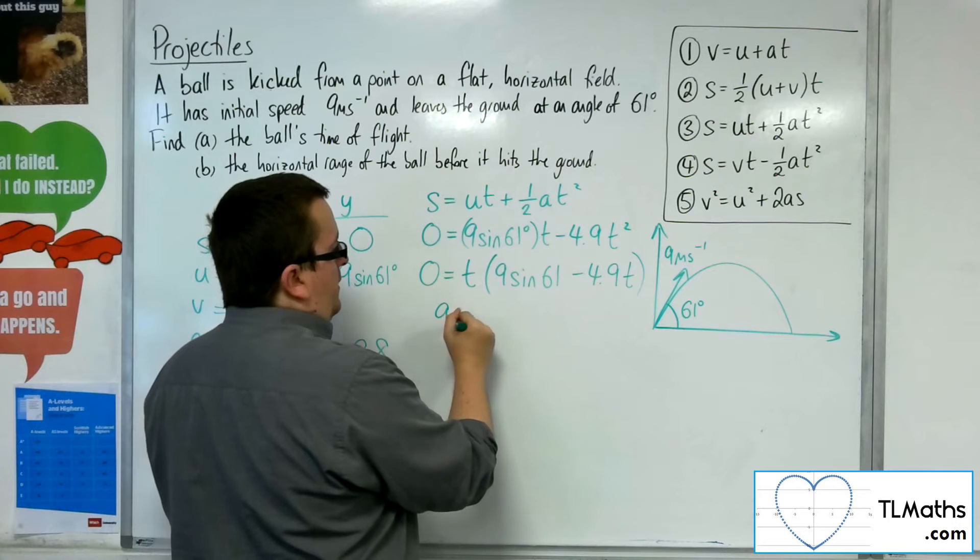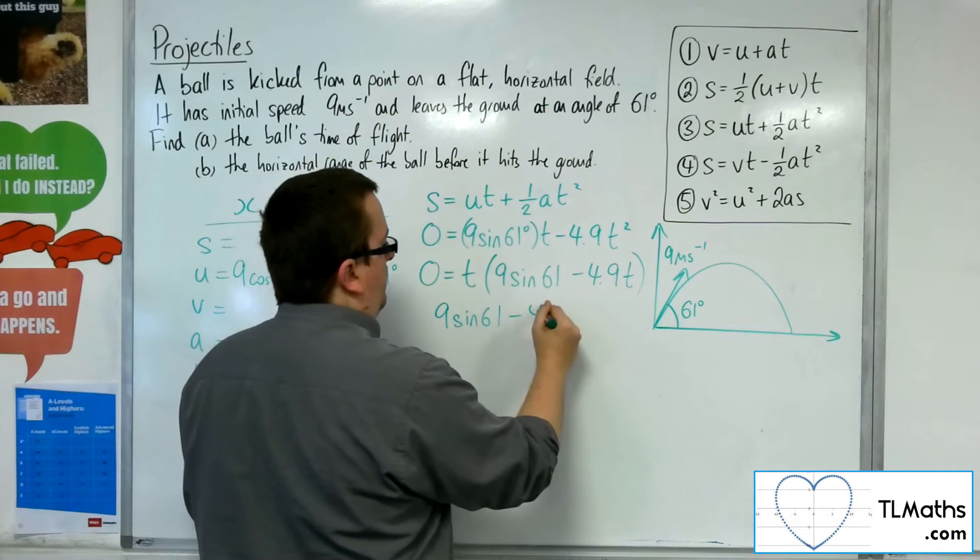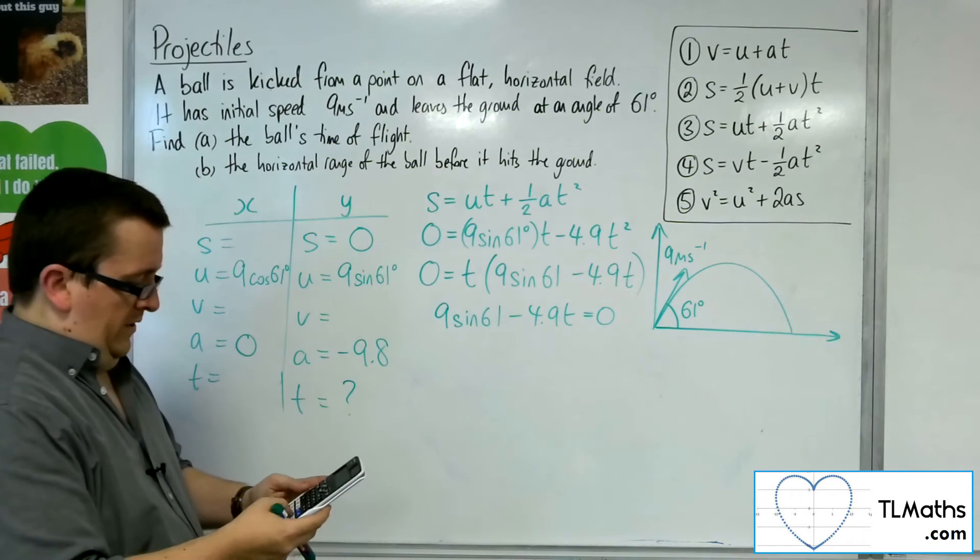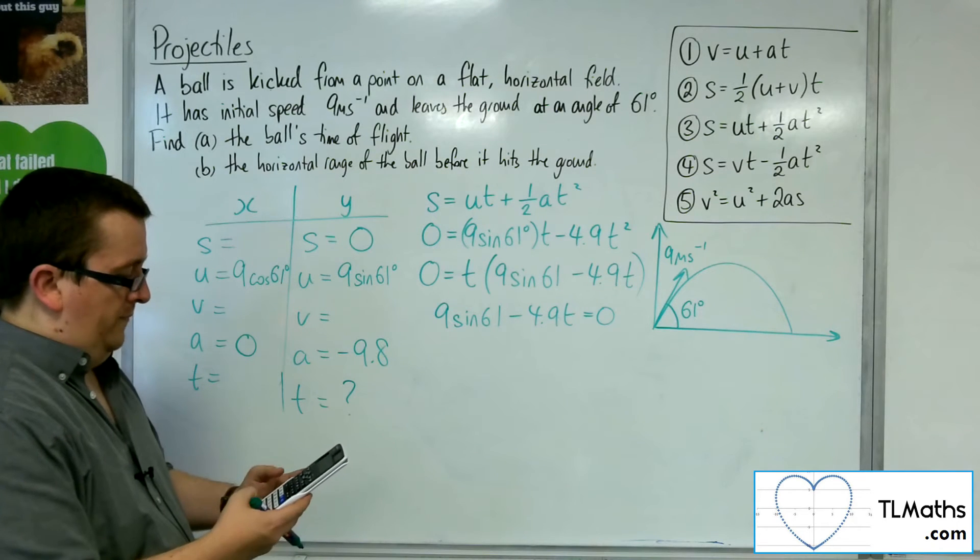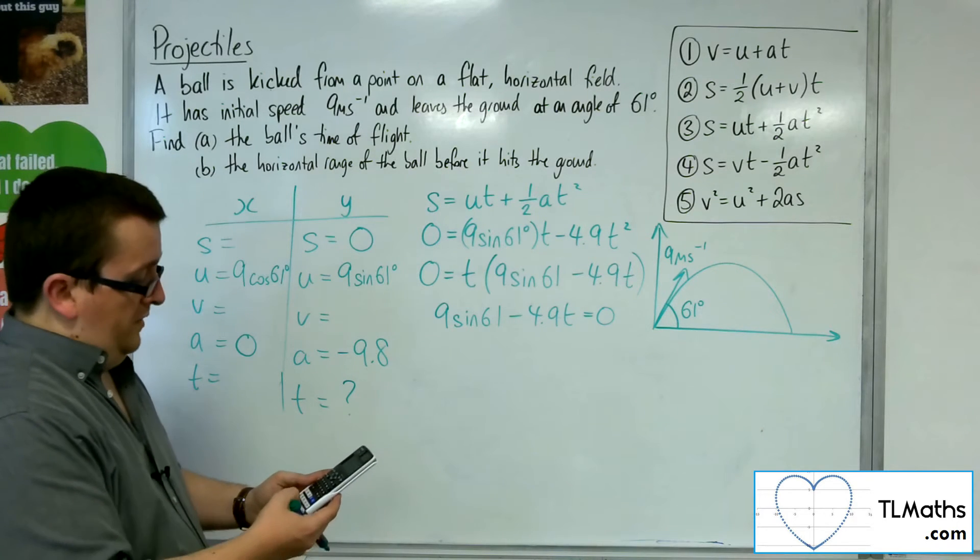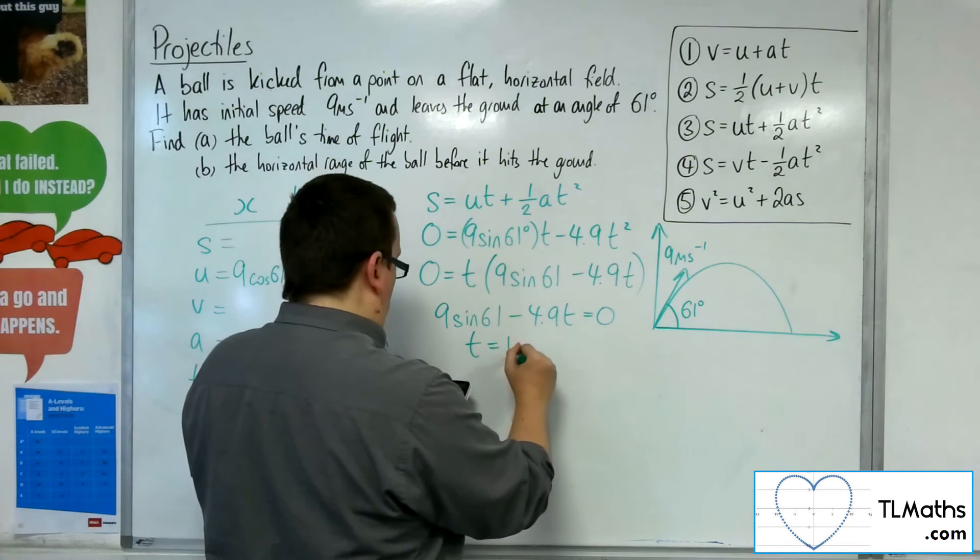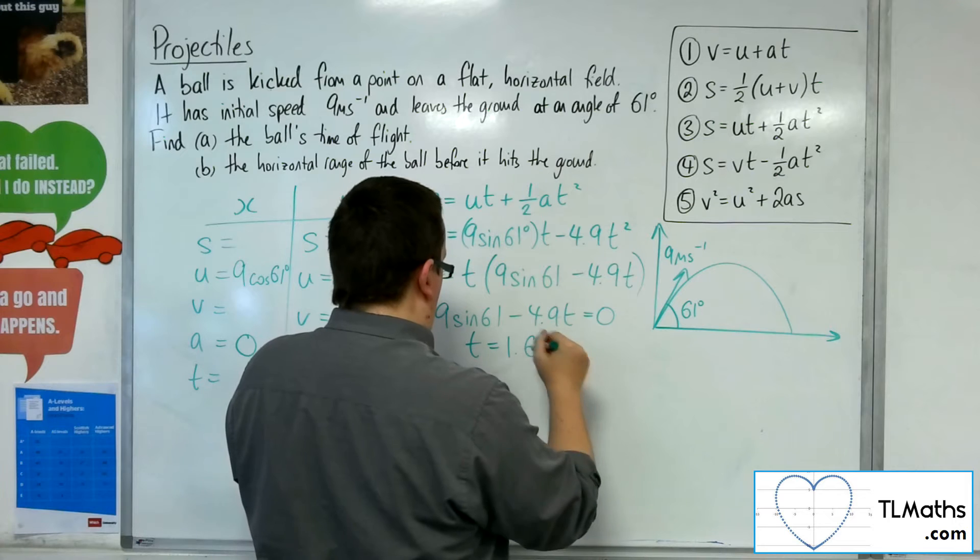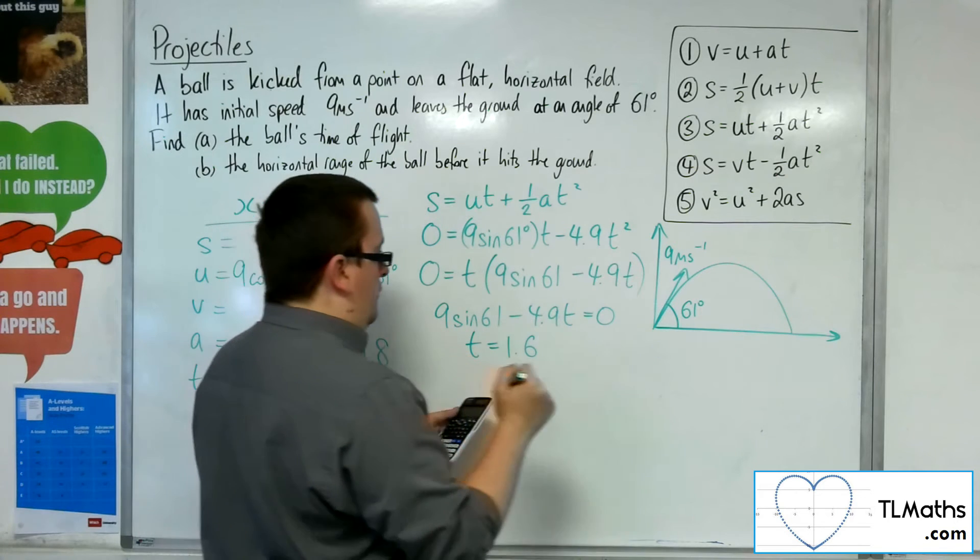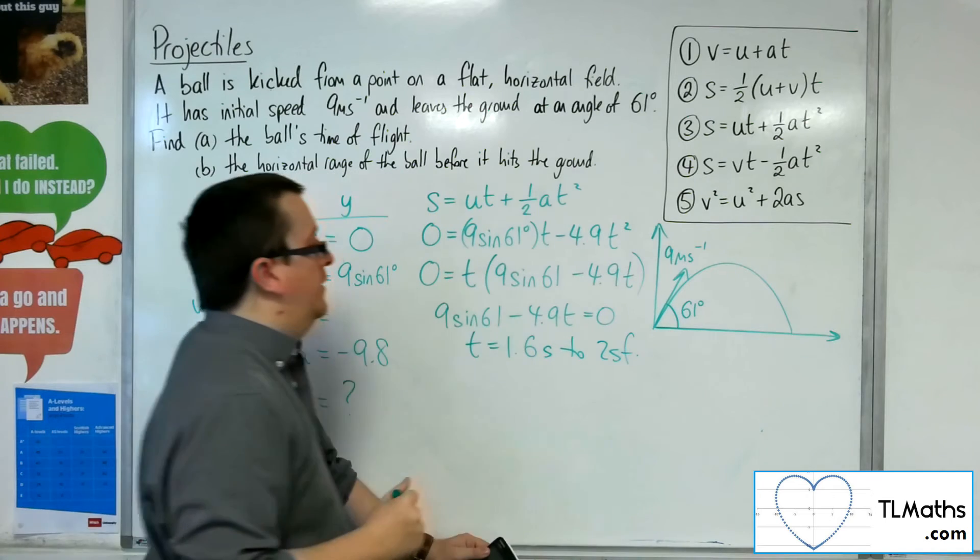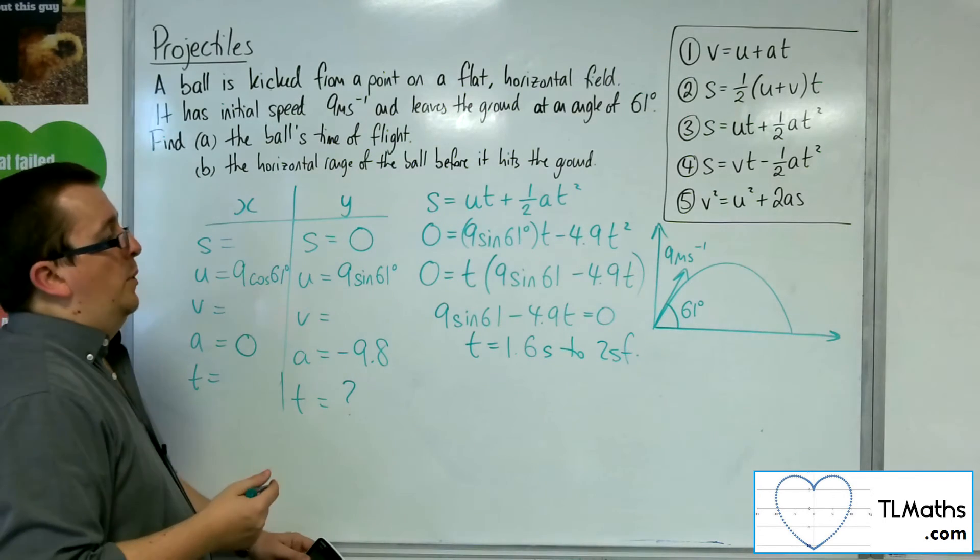So 9 sine 61 take 4.9 T is 0. So 9 times sine of 61 is 7.87. Divide by the 4.9, and I get T is 1.6064436. So 1.6 seconds to two significant figures. That's how long the ball is in the air.